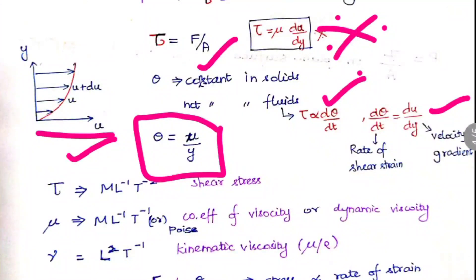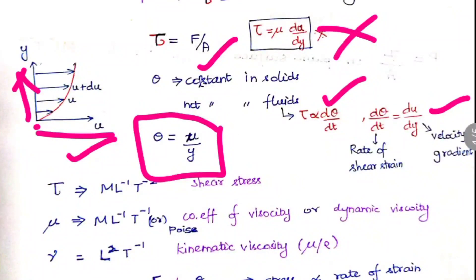Looking at the velocity profile: the horizontal axis is velocity u and the vertical axis is y. At y = 0, u = 0 (no-slip condition). As y increases, u also increases — at one layer it is u, and at the next it is u + du. This change in velocity between layers is what creates shear resistance and viscosity.